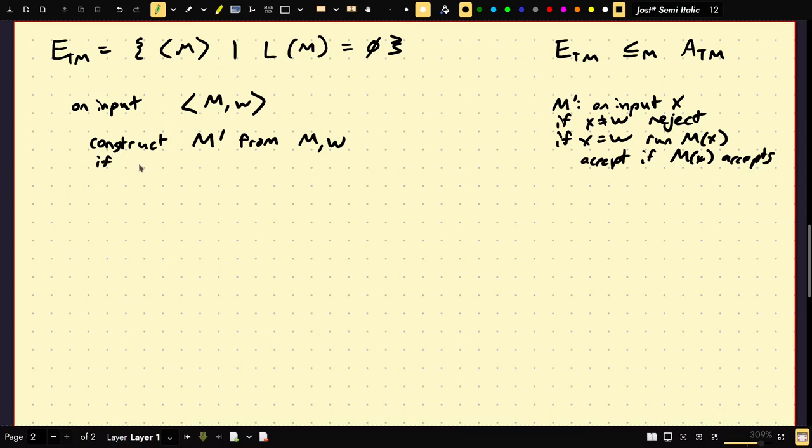So, if M prime W is in ETM, so what we say is, if this accepts, then we reject. And then else, that means this is rejected, then we accept.